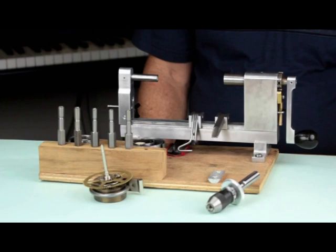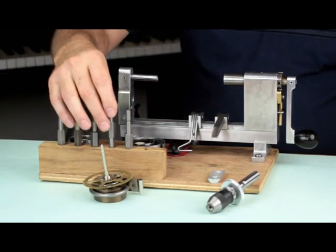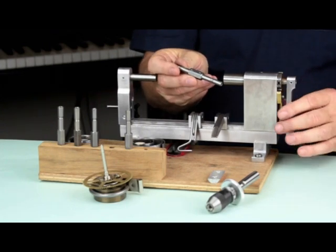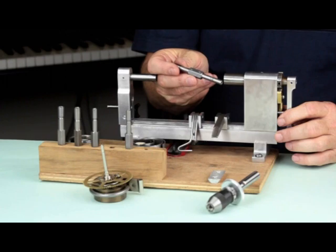Some spring winders use a chuck like on a drill motor. The Ollie Baker uses the chuck from your letdown key set. This saves a lot of fiddling and assures that the winding arbor is held firmly in place.